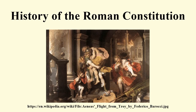In 54 BC, violence began sweeping the city, and in 53 BC Crassus was killed. In January 49 BC, the Senate passed a resolution which declared that if Caesar did not lay down his arms by July of that year, he would be considered an enemy of the Republic. In response, Caesar quickly crossed the Rubicon with his veteran army and marched towards Rome. Caesar's rapid advance forced Pompey, the consuls, and the Senate to abandon Rome for Greece, and allowed Caesar to enter the city unopposed.